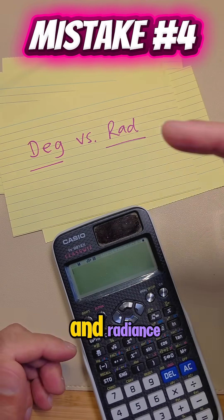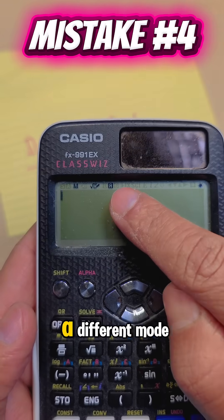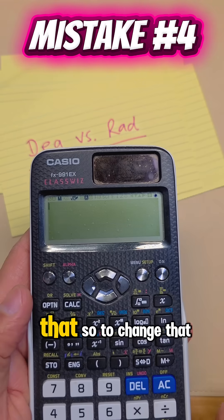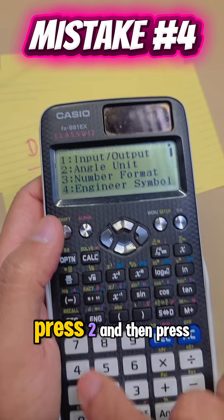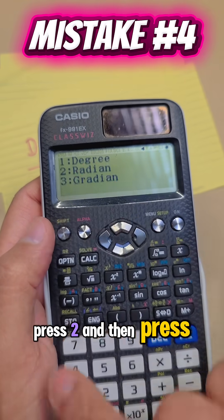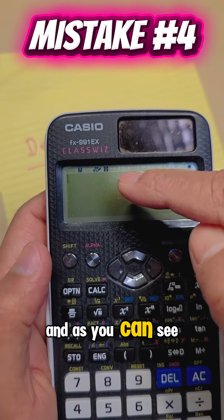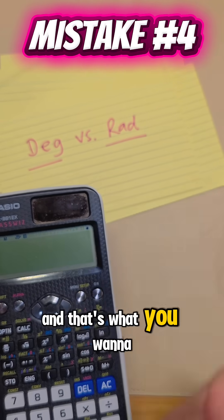The most common one: degrees and radians. Let's say you look at your calculator and it's in a different mode, radians. Then you don't want that. So to change that, press shift, press 2, and then press 1 for degrees. And as you can see, it's been changed. And that's what you want to work with.